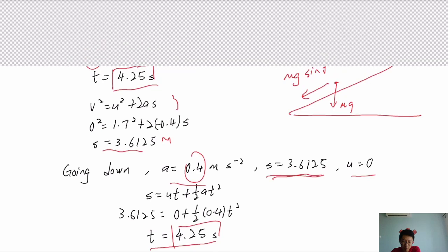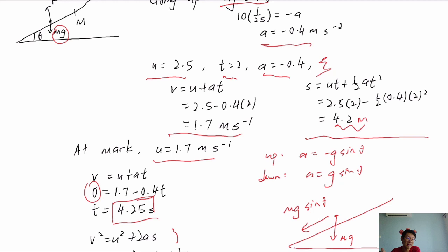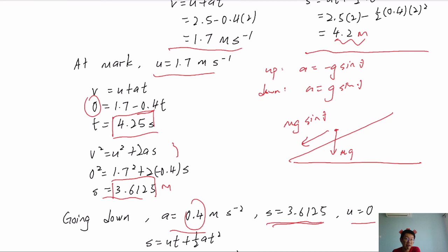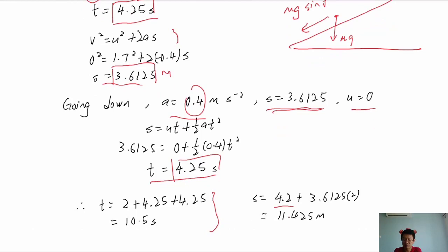For total distance: the first part is 4.2 m from starting point to the mark. From the mark to the highest point is 3.615 m, which we multiply by 2 because the particle goes from the mark up to the highest point and back to the mark again. Adding these gives the total distance traveled.